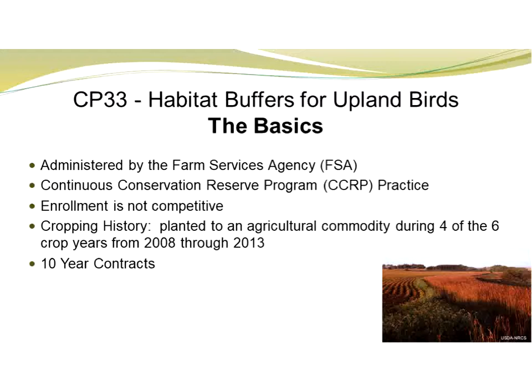The CP33 practice is administered by Farm Services Agency and it is a continuous conservation reserve program. This means producers can go into an FSA office at any time of the year and enroll or offer an application for CP33. The enrollment is not competitive — in comparison to general CRP where applications are ranked, continuous CRP does not have that, so it really offers an opportunity to everyday producers wanting to do good things for conservation.